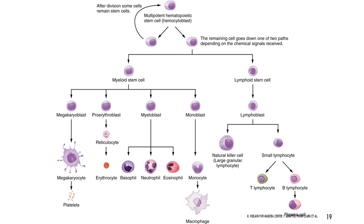When a hematopoietic stem cell divides, one cell replaces the stem cell and the other differentiates into a specific blood cell type. It might become a red blood cell, a granulocyte, an agranulocyte, or platelets — which are cell fragments involved in clotting.